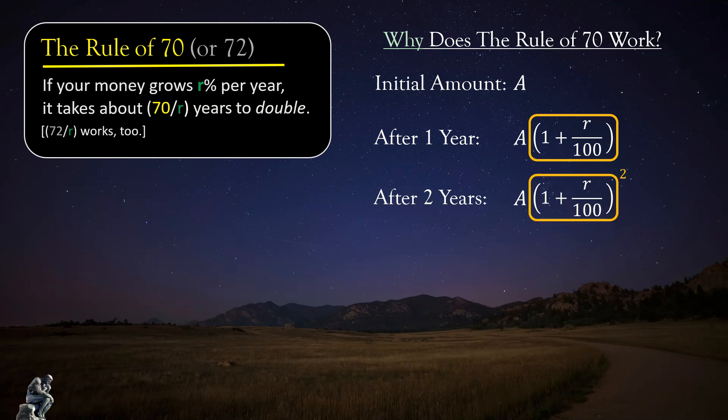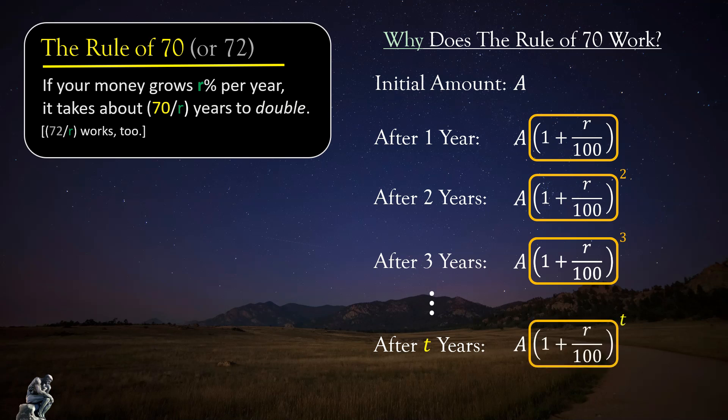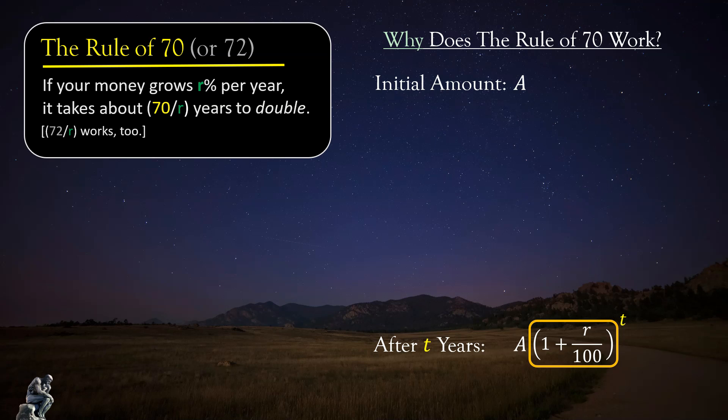And now you can surely see how this works. After three years, we have all the money we started with at the end of the second year times the orange box. Or more compactly, after three years, we have A times the orange box to the power of three. And on and on this goes, it should now be clear that after t years, for any value of t, we'll have A, our initial amount, times the orange box raised to the power of t, one box for each year. This is progress because we can use this expression to build an equation whose solution will be the doubling time that we are trying to prove really is about 70 over r.